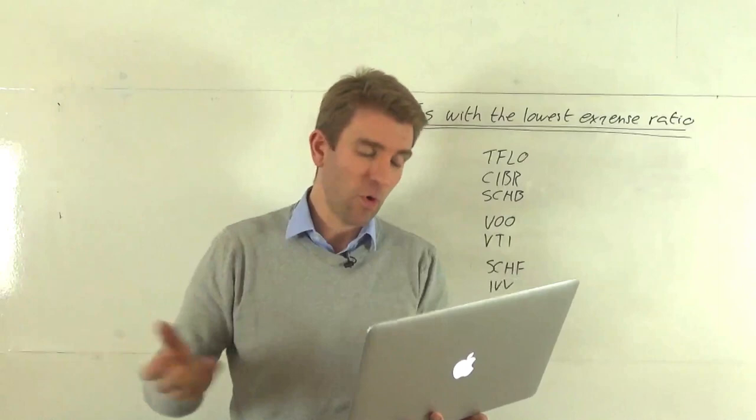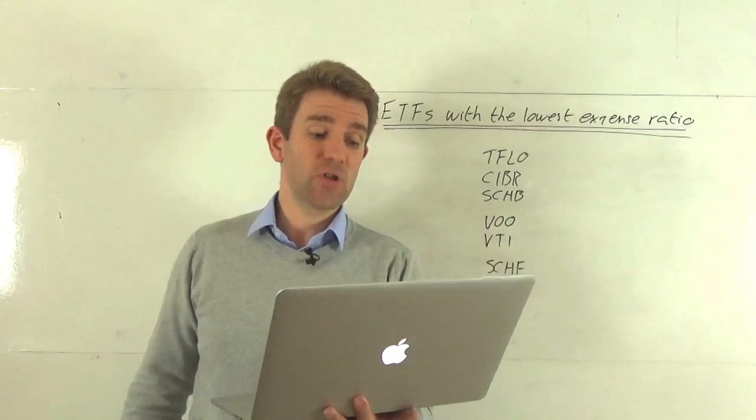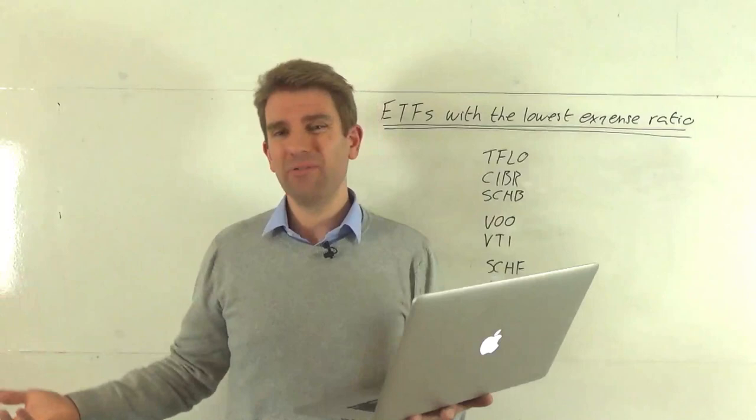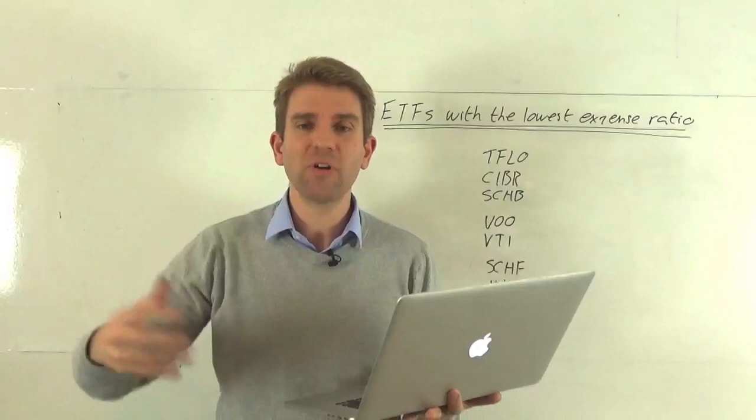Back to this Cyber Security ETF. It tracks the performance of the CEA Cyber Security Index. Assets on this one, $766 million. Three-month volume, a little bit higher, 196,000. We're probably getting in and out reasonably easy. Dividend yield, pretty low, 0.07%. These cyber security companies are reasonably new. They're probably reinvesting their cash as opposed to paying out a dividend. Expense ratio, only 0.6% on this.